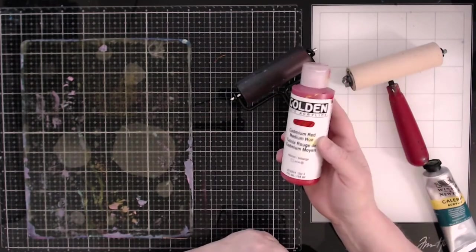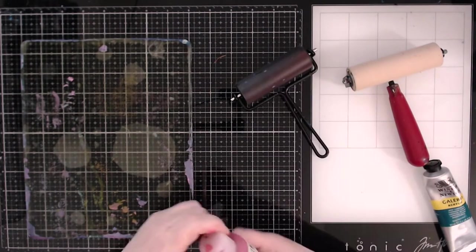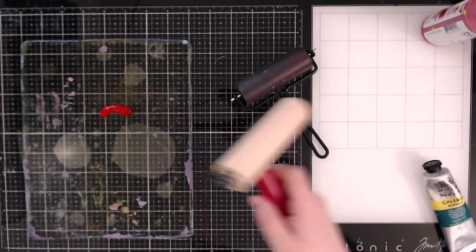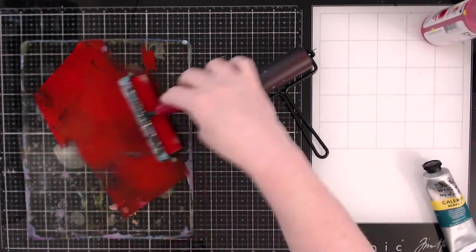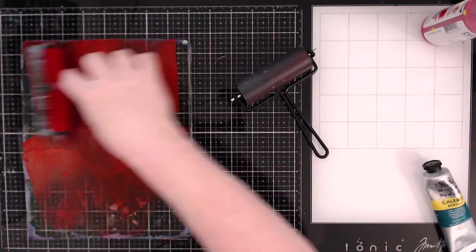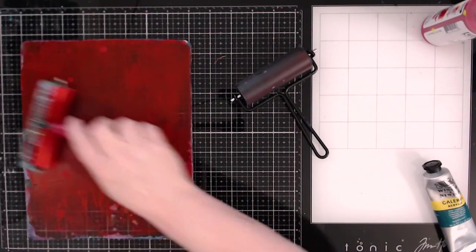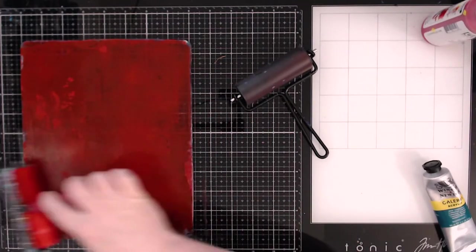The golden acrylic. Now this is just fluid acrylic golden paint. Just going to put some on my plate, probably a little bit more than what I normally do. And we're just going to use the speed ball brayer to roll out this paint. And as you can see, it goes on pretty smoothly. It covers the plate.